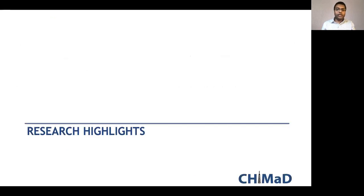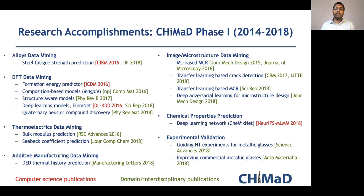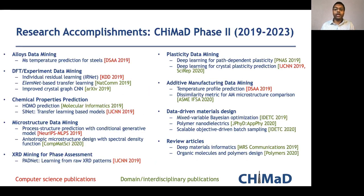Let's look at some research highlights. This is what we accomplished in CHIMAD phase one — from 2014 to 2018. Here I have grouped different works according to some categories, highlighting computer science publications and domain publications in red and green respectively. Thanks to the momentum we were carrying from phase one, this is what phase two looks like right now, with a good mix of computer science and domain publications. For the next 10–15 minutes, I will present six highlights of these.